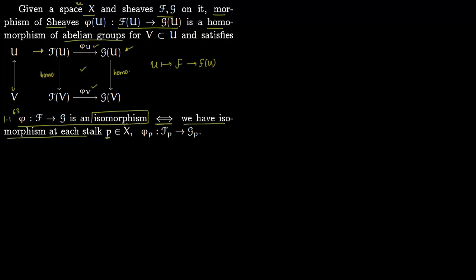You pick a point in space X; corresponding to this point you have two stalks for sheaves F and G. You have a morphism or group homomorphism between them. So instead of thinking in terms of open sets U you can also think in terms of the stalk at P. To prove this you show that the map is injective if and only if it is surjective at the stalk level. This proposition tells us why it is important to think in terms of stalks.